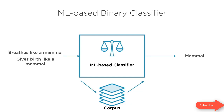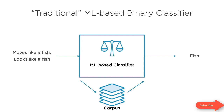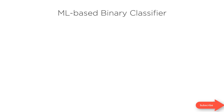In a traditional machine learning based classifier, the output depends on what you feed in. If you feed in other information about a whale — it moves like a fish, it looks like a fish — your classifier is quite likely to categorize it as a fish. For traditional machine learning based classifiers, which is what we'll deal with in this course, you need to feed in the right features to get the right prediction.